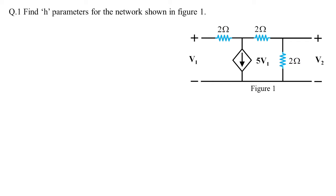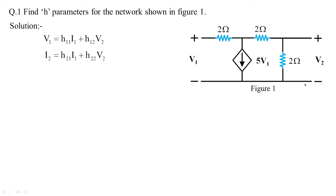We need to find out the H parameters. First, we look at the standard equations for H parameters. These are the two standard equations, and the approach is: short-circuit the output port to obtain h11 and h21, then open-circuit the input port to find h12 and h22. We are going to solve the problem using this standard approach.